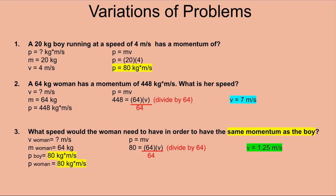Problem three: what speed would the woman need to have the same momentum as the boy? The boy's momentum was 80 kg·m/s. We're solving for the woman's velocity, with her mass still 64 kg. Using p equals mv: 80 = 64v. Dividing both sides by 64 gives a velocity of 1.25 m/s.